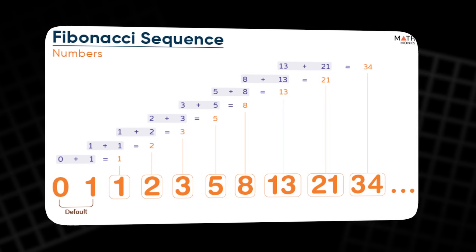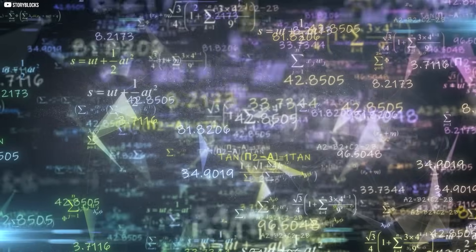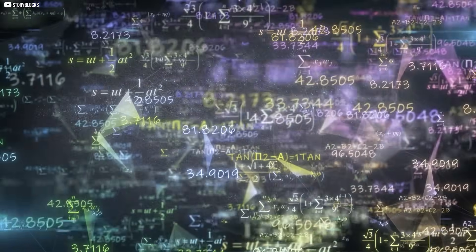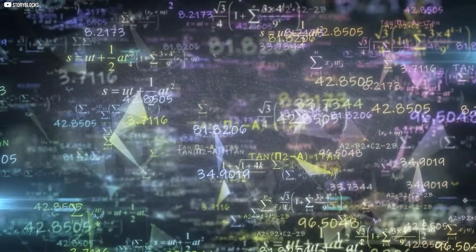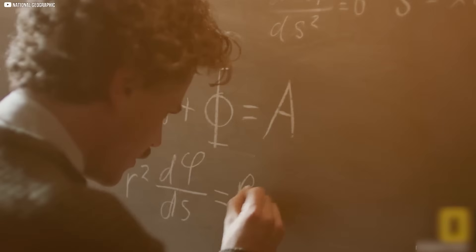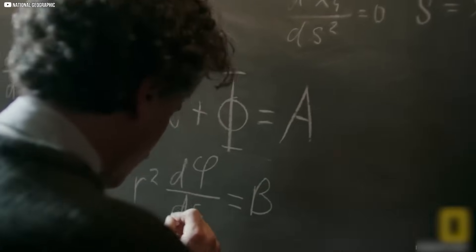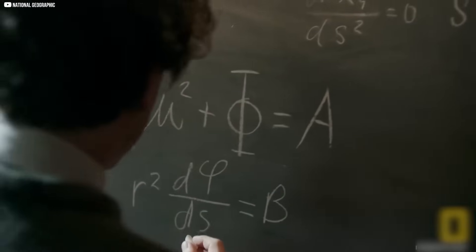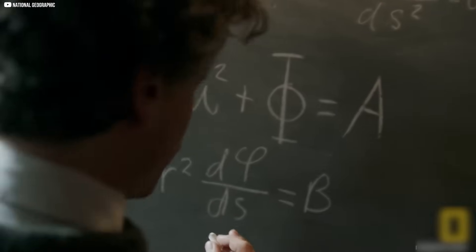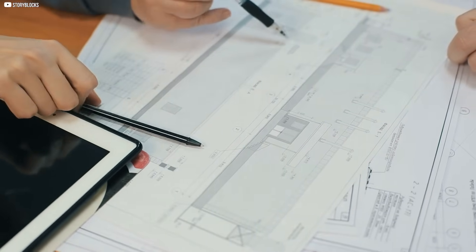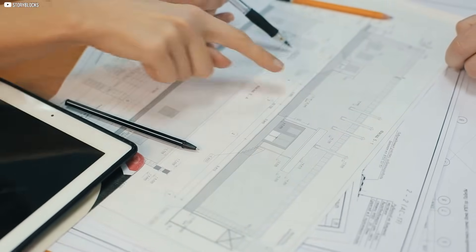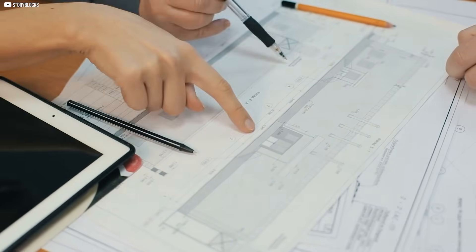When you look at these examples, the Fibonacci sequence's prevalence becomes undeniable, making it clear that nature itself seems to favor this specific arrangement.